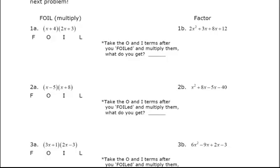So this is page 8 where you have FOIL in one column and then Factor in the second column. I want you on the left side to go ahead and FOIL.